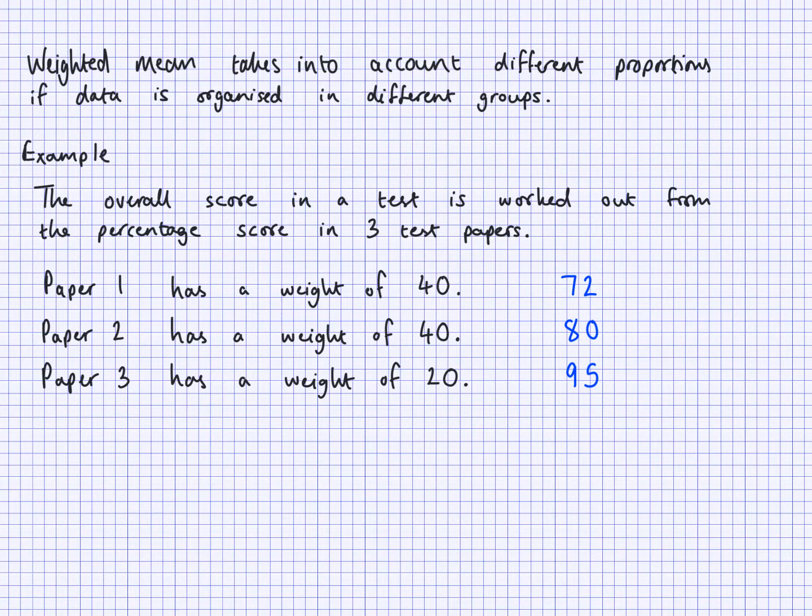To find this student's overall score in the test, you work out a weighted mean for these scores. So 72 has a weighting of 40, 80 has a weighting of 40, and 95 has a weighting of 20. The calculation you're going to do is 72 times 40, add that to 80 times 40, and then add that to 95 times 20.